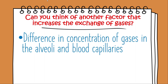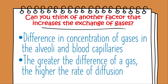Other than the alveolar structure, another factor that can increase the exchange of gases in the human body is the difference in concentration of gases in the alveoli and blood capillaries. The greater the difference in concentration of gases in the alveoli and blood capillaries, the higher the rate of diffusion of the gases between them.